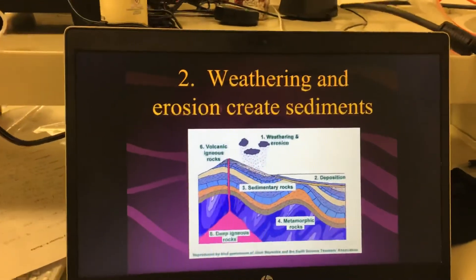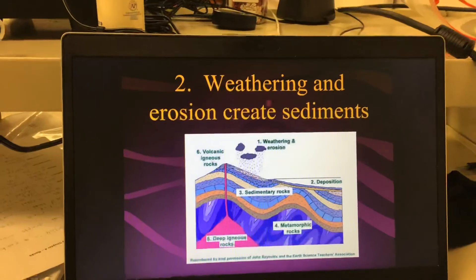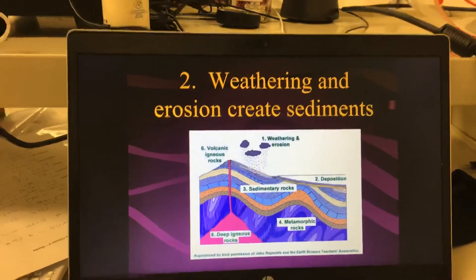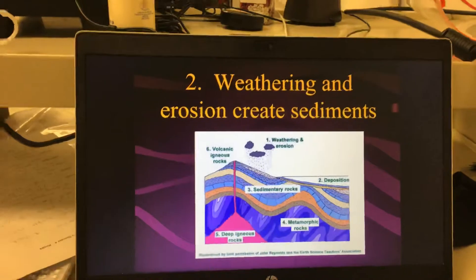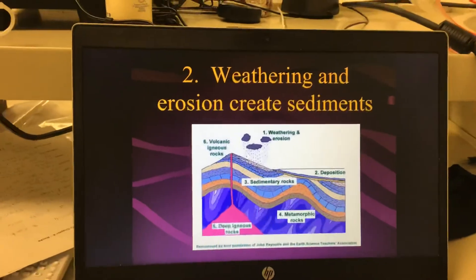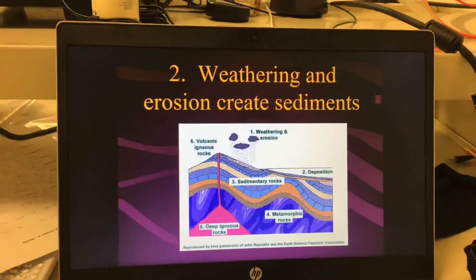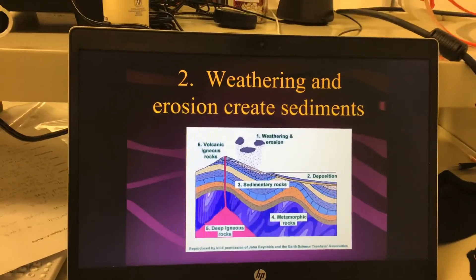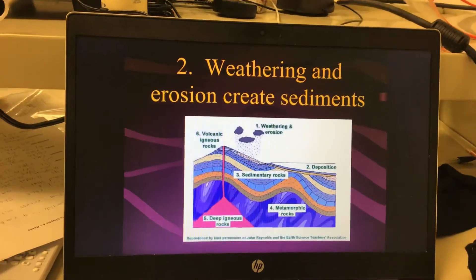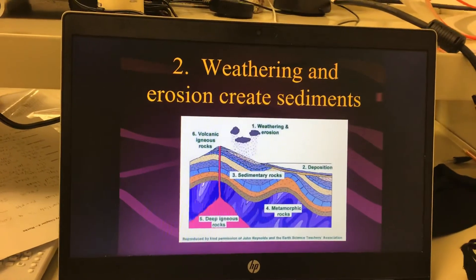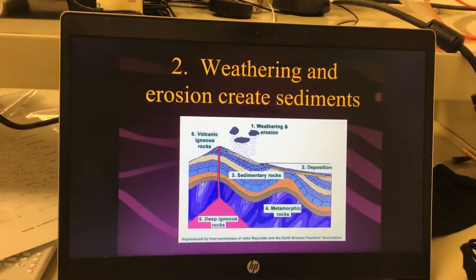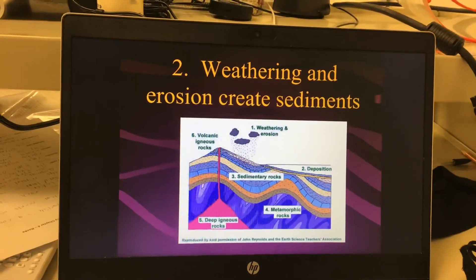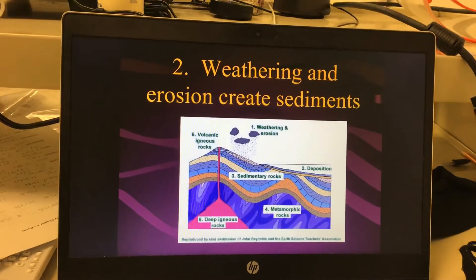So what happens is we start with a rock — let's say it's an igneous rock, like Mount Rushmore. Mount Rushmore over time is weathering and eroding, creating sediments. A sediment is a little particle that wears off.